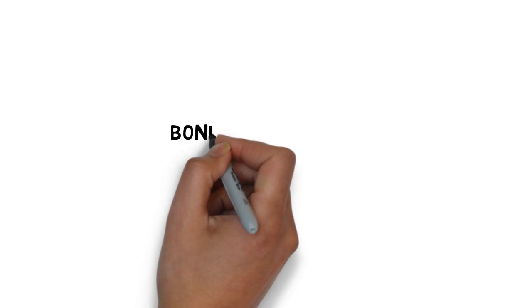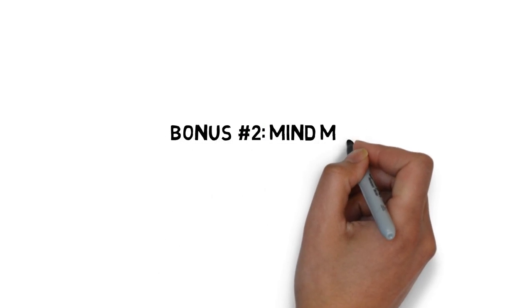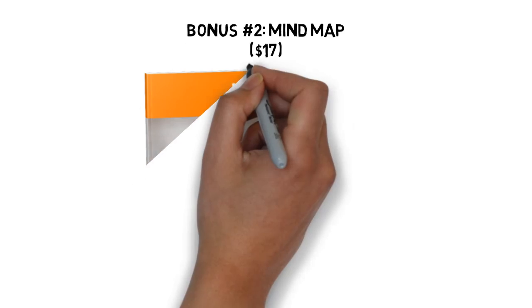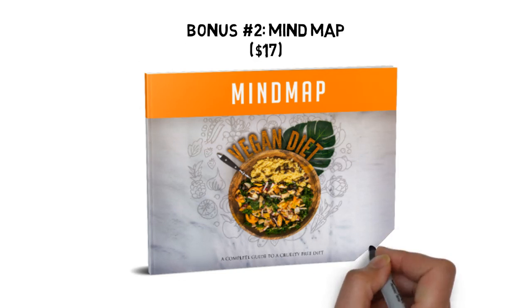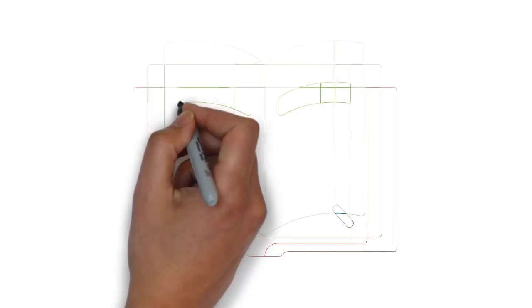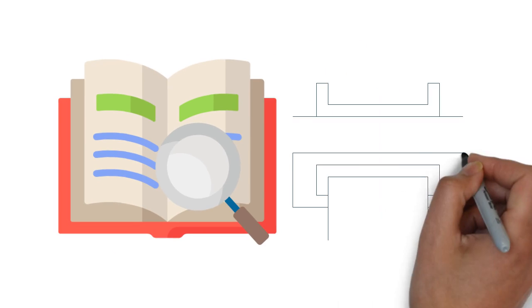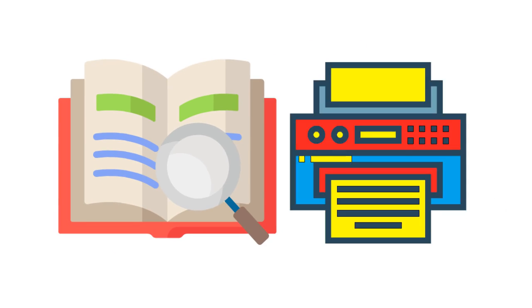Fast action bonus number two, going vegan mind map, valued at $17. Some people learn better by looking at a mind map. The mind map gives you an overview of everything covered inside the guide. You can also print it out for quick reference anytime you need it.